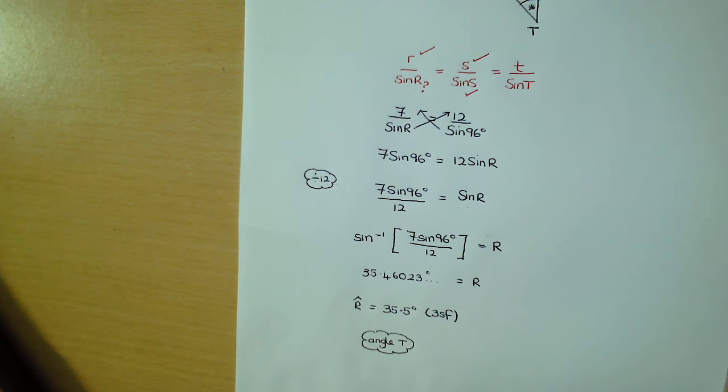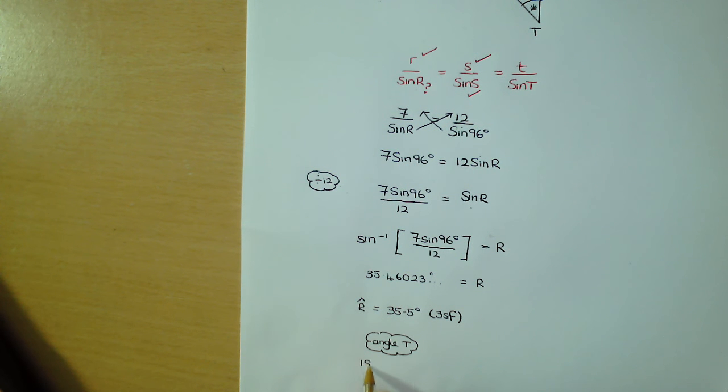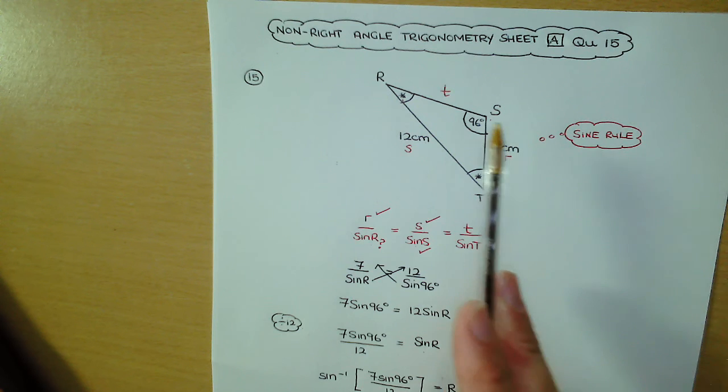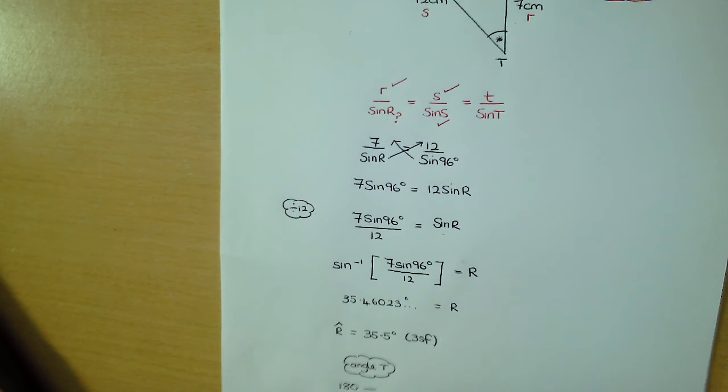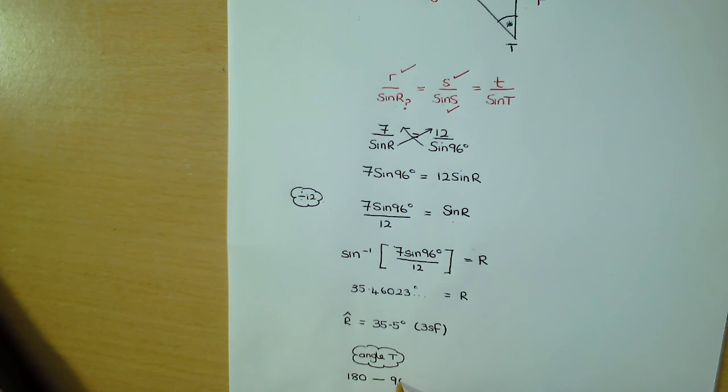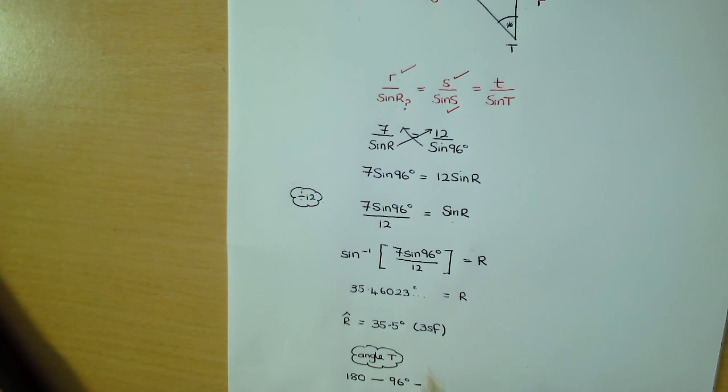To get that, we're starting with 180. That's the total angle in a triangle, and we're subtracting the angles that we know. So we're subtracting 96, and we're subtracting our value for R. Now, word of warning, don't use a rounded value. We've talked about this before. Use a previous non-rounded value. So I'm subtracting 35.46023.